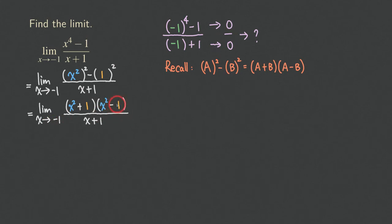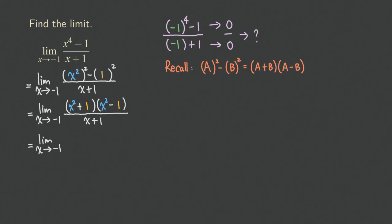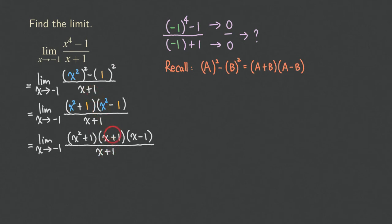Looking at the second factor, x squared minus one, we should realize that's also the difference of two squares — so we can factor it one more time. Here a is x and b is one, and repeating the process, x squared minus one becomes x plus one times x minus one. So we now have x squared plus one, times x plus one, times x minus one, all over x plus one.